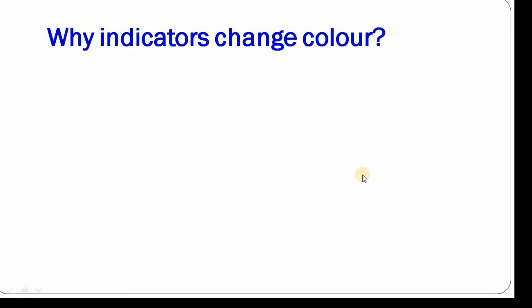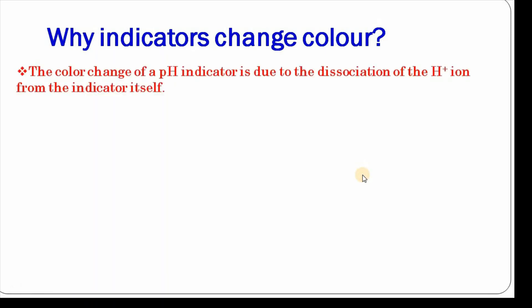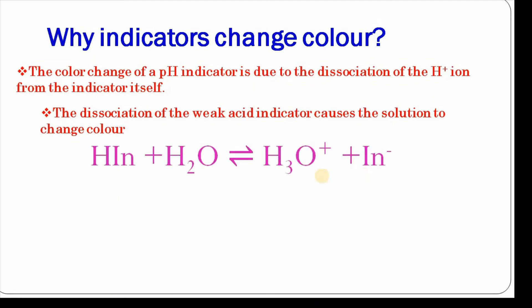Why do indicators change color? The color change of a pH indicator is due to the dissociation of hydrogen ion from the indicator. The dissociation of weak acid indicator causes the solution to change color.